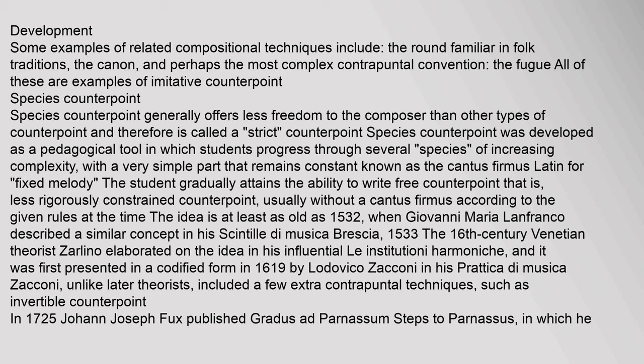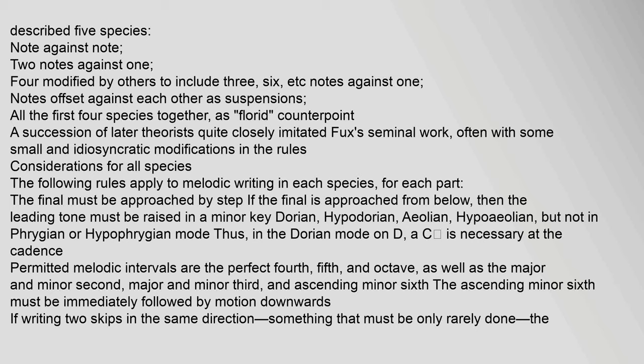In 1725, Johann Joseph Fuchs published Gradus ad Parnassum — Steps to Parnassus — in which he described five species: note against note; two notes against one; four notes against one (modified by others to include three, six, etc.); notes offset against each other as suspensions; and all the first four species together as florid counterpoint. A succession of later theorists quite closely imitated Fuchs's seminal work, often with some small and idiosyncratic modifications in the rules.